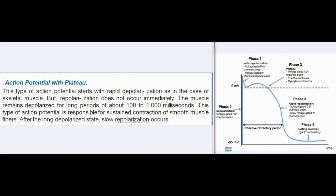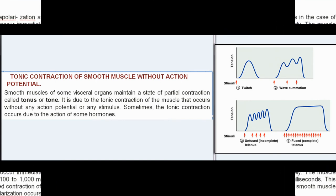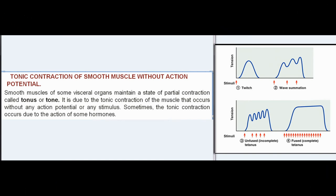Action potential with plateau: this type of action potential starts with rapid depolarization as in skeletal muscle, but repolarization does not occur immediately. The muscle remains depolarized for long periods of about 100 to 1000 milliseconds. This type of action potential is responsible for sustained contraction of smooth muscle fibers. After the long depolarized state, slow repolarization occurs.